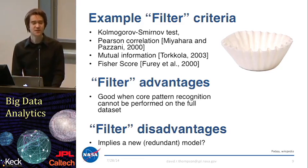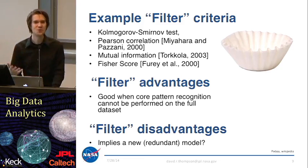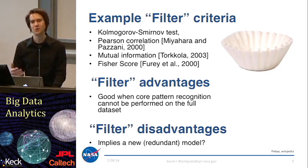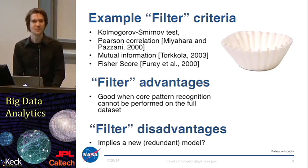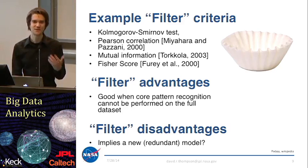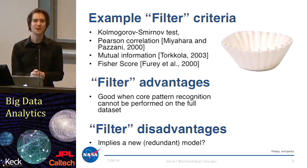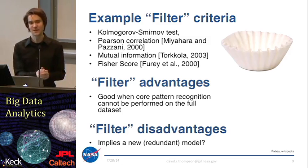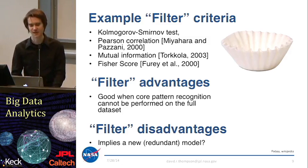The disadvantage is that you're positing some new performance measure that's different from what you ultimately want to evaluate, implying a potentially redundant new model. This raises the question: why are we going through all this extra work of building a whole new model and performance metric for our data when really what we're interested in is our k-nearest neighbor classification?